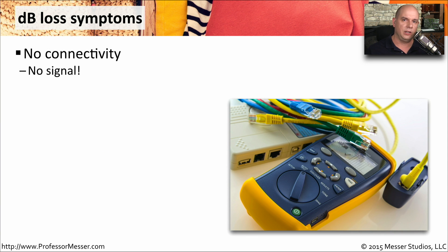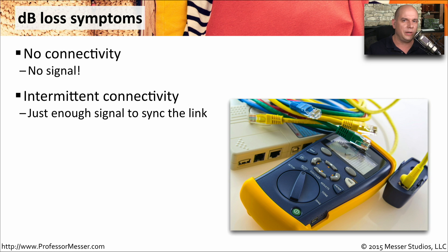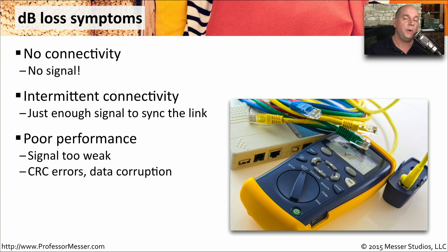If we're not able to get enough signal across the network, the other side is not going to see anything — there won't be any connectivity and no data will be communicated. You might have just enough signal to synchronize the connection, but because the signal is so low, you may have intermittent connectivity. Even if you have enough signal to get the link up and send some data, you may still see CRC errors or data that has to be retransmitted because it's corrupted when it arrives on the other side.